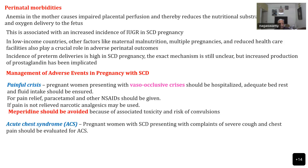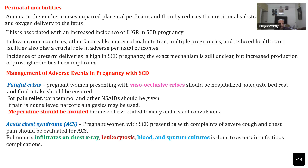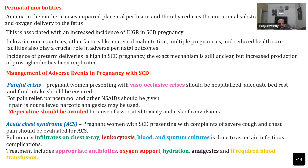The second problem is acute chest syndrome. The pregnant woman can present with severe cough and chest pain and may have infiltrates on chest x-ray and leukocytosis. Blood and sputum culture should be done to ascertain if there are any secondary infections, and appropriate antibiotics, oxygen support, and hydration are required, along with blood transfusion.